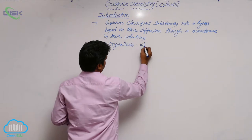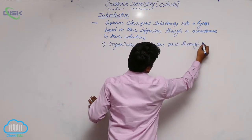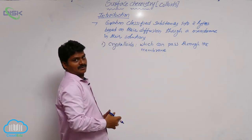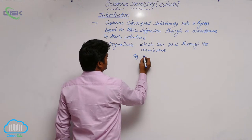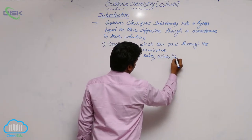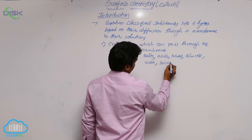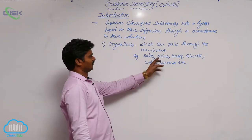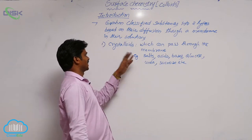What are crystalloids? Crystalloids are substances which can pass through the membrane in solution. Examples for crystalloids are simple salts, acids, bases, glucose, urea, sucrose, etc. When they are in water, their solution can pass through the membrane. So these substances are classified as crystalloids.